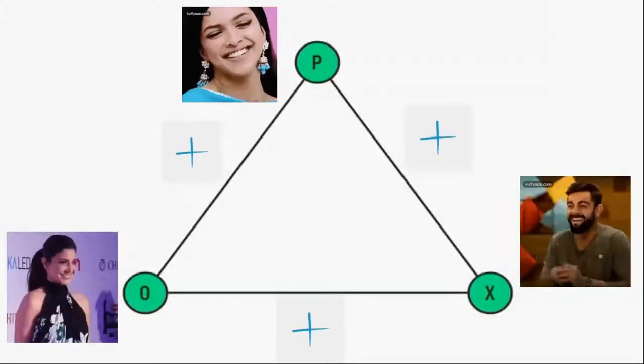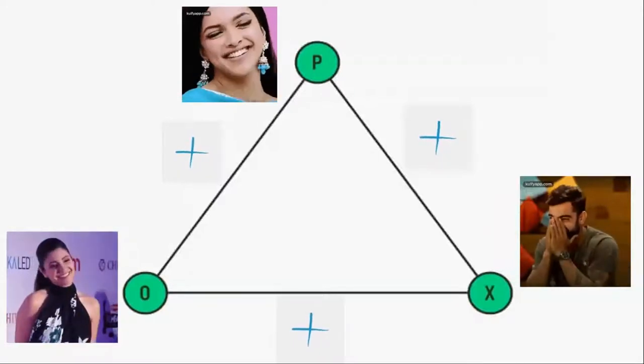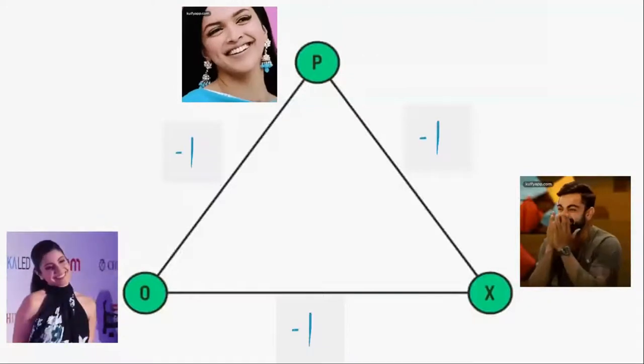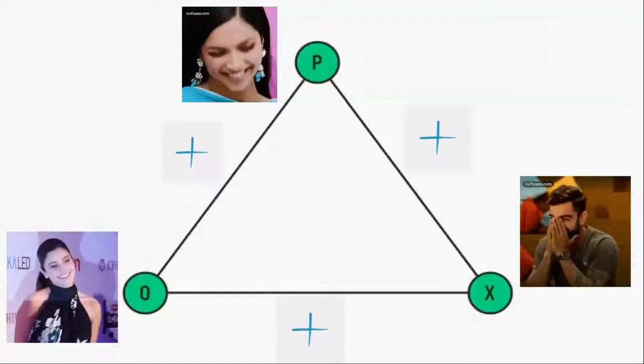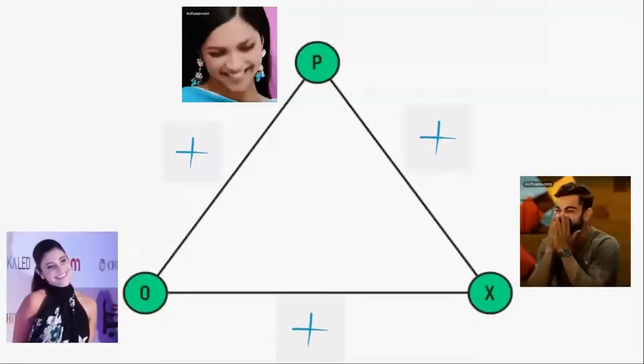So let's look at an example of balance theory. Heider explained the balance theory by applying a simple example which was a friend's friend is my friend. So Dipika's friend Anushka likes Kohli, so Dipika becomes Kohli's friend.